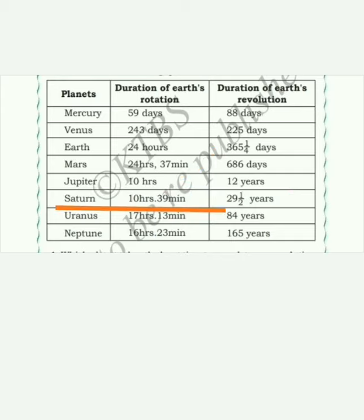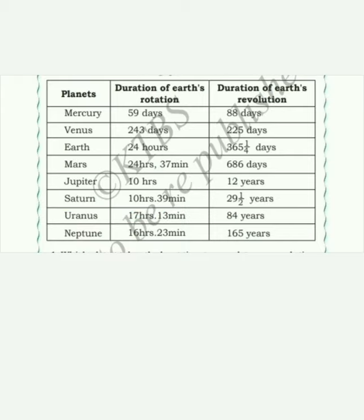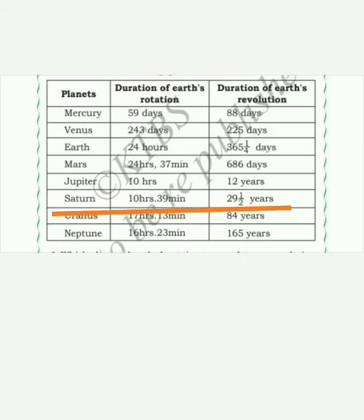After Jupiter, the planet is Saturn. Saturn takes 10 hours 39 minutes for rotation and 29 and a half years for its revolution.